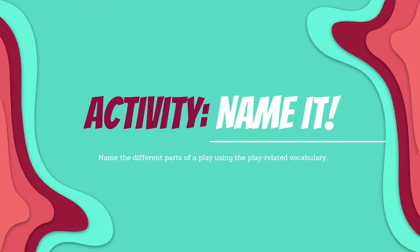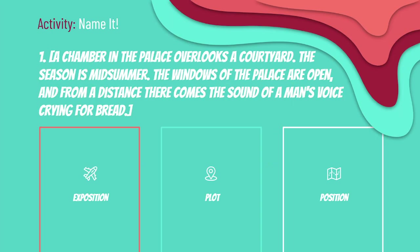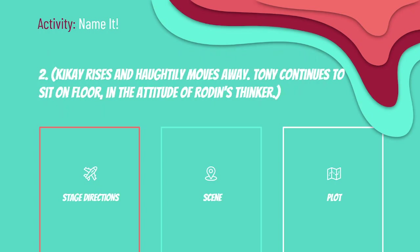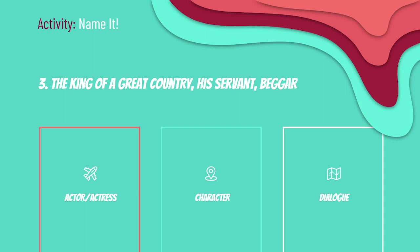Activity: Name It. Name the different parts of a play using the play-related vocabulary. Number one: 'A chamber in the palace overlooks a courtyard. The season is mid-summer. The windows of the palace are open, and from a distance, there comes the sound of a man's voice crying for bread.' What part of the play is this? The answer is exposition. Number two: 'Kikai rises and haughtily moves away. Tony continues to sit on the floor in the attitude of Rodin's finger.' What part of the play is this? The answer is stage directions. Number three: 'The king of a great country, his servant, beggar.' What part of the play is this? The answer is character.